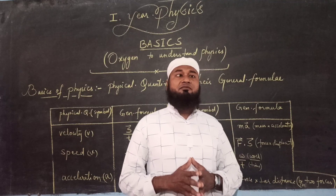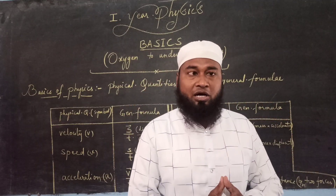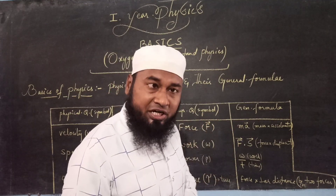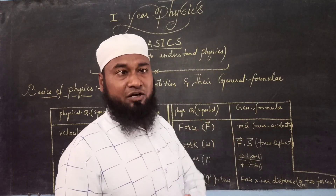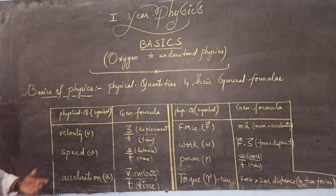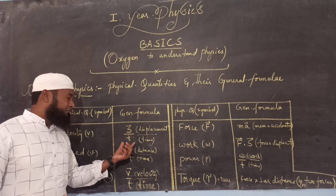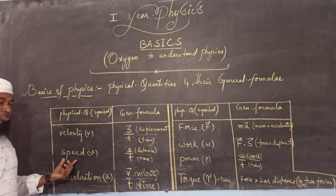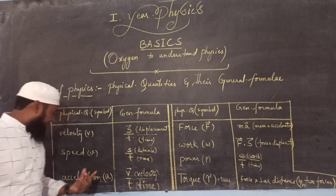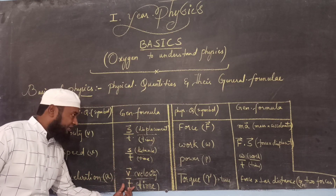Each and every Physical Quantity will have some symbol as well as a General Formula. Here I have given a table of Physical Quantities along with their symbols and General Formulas — have a look and take a screenshot. The first one is Velocity; General Formula is Displacement by Time. Speed; General Formula is Distance by Time. Acceleration; General Formula is Velocity by Time.